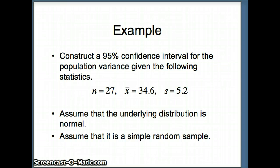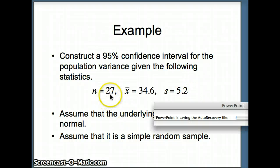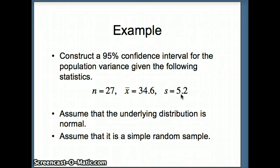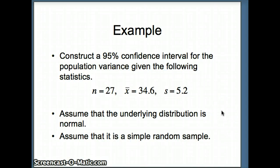Here's our first example. We want to construct a 95% confidence interval for the variance given the following statistics: n is 27, x-bar is 34.6, and s is 5.2. s is the sample standard deviation; the variance would be 5.2 squared, but that is not the parameter. The goal is to capture the parameter, and with a 95% confidence interval, that is our probability of capturing it. We have to assume the underlying distribution is normal and that our 27 items come from a simple random sample.